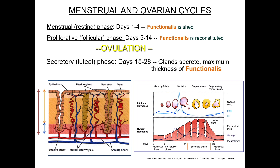The secretory, or luteal, or progestational phase occurs from days 14 through 28. After ovulation, the corpus luteum is secreting progesterone, and in response, the uterine glands will secrete glycogen and glycoproteins to nourish the embryo. These glands become coiled and distended and fill with secretory product, which will thicken the functional layer. If fertilization does not occur, the corpus luteum degenerates, the progesterone levels drop, and the cycle will return to the menstrual phase.